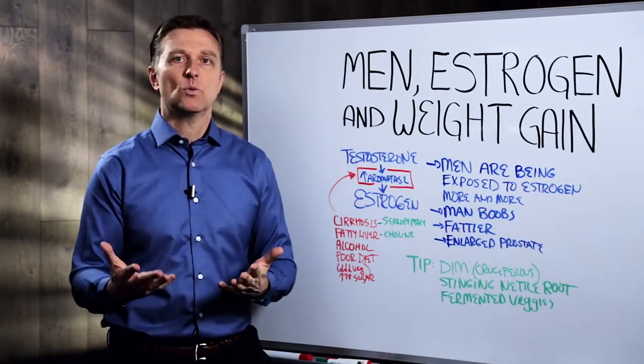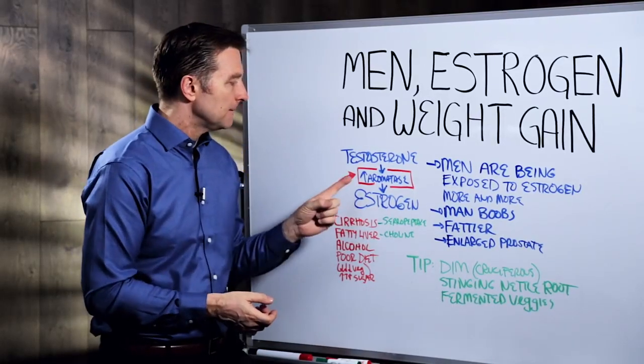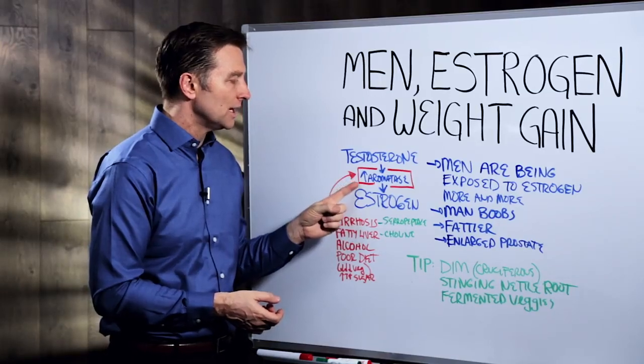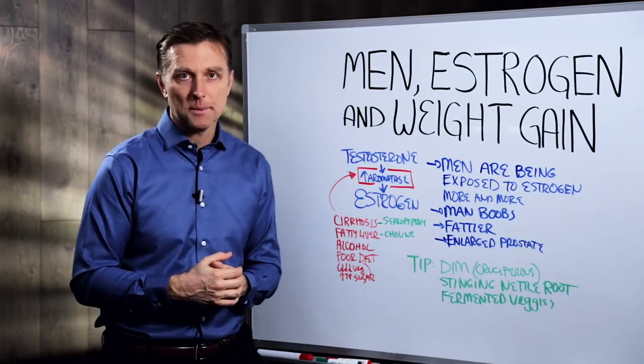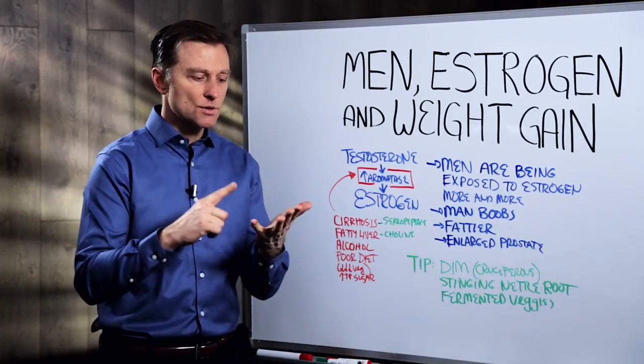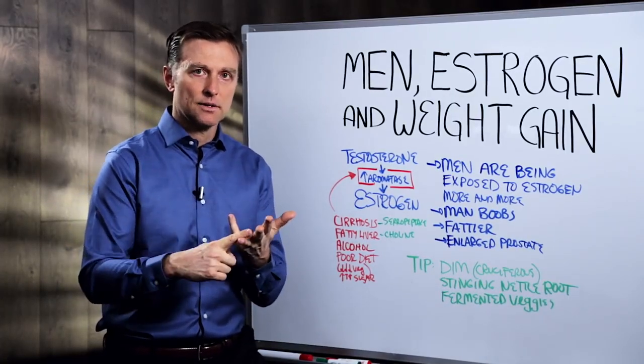So now here's the question, what can we do about it? First of all, what will mess up this hormone and increase this enzyme for this conversion is a liver problem. Mainly two things, cirrhosis of the liver and a fatty liver.